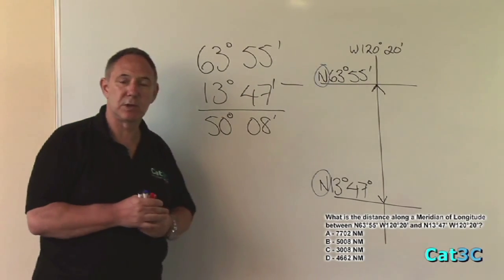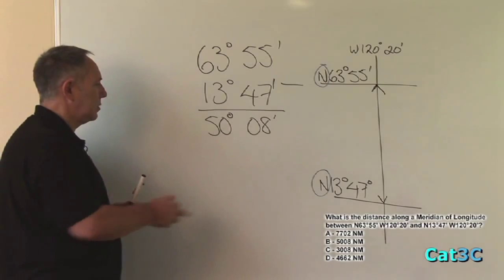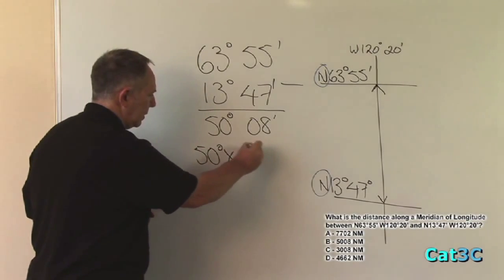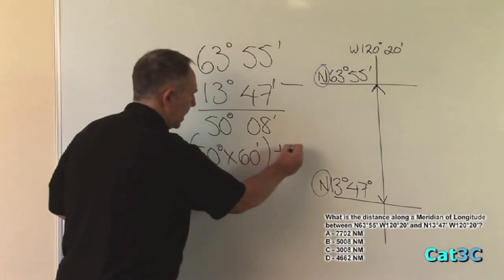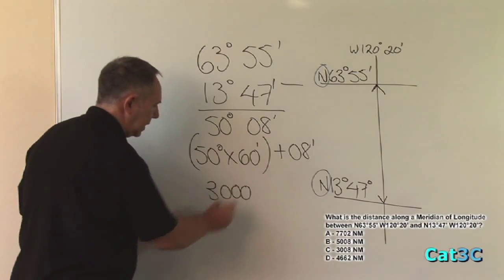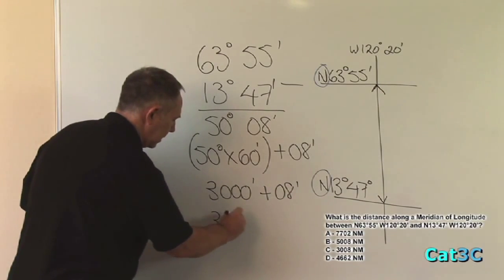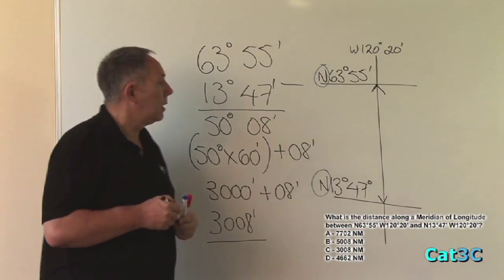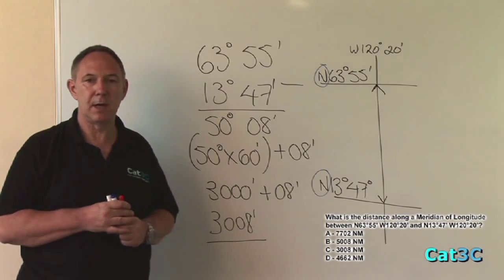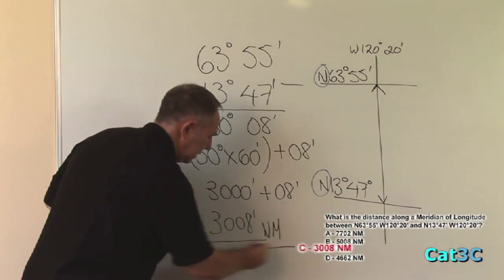However, that is no use to us as it is — we need to convert it into a distance. In order to convert it into a distance, we need to multiply 50 degrees by 60 minutes and then add that to the 8 minutes. 50 degrees times 60 minutes is 3,000 minutes, plus the 8 minutes gives us 3,008 minutes. With respect to changes of latitude, one minute of latitude is equal to one nautical mile. Therefore, 3,008 minutes is also equal to 3,008 nautical miles.